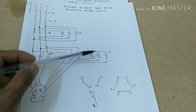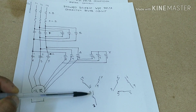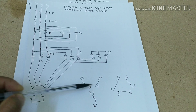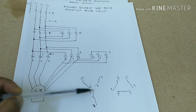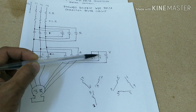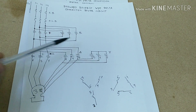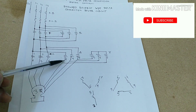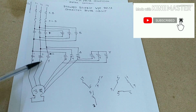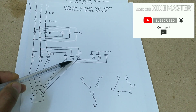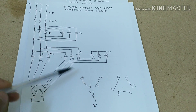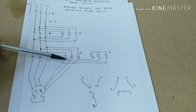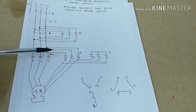When the Y contactor closes, it connects terminals 5 and 4, and 6, 5, 4, and 6 — this is the Y connection for Y starting. Then for delta, it closes terminals 1 and 6, 1 and 6, 2 and 4, 2 and 4, and 3 and 5, 3 and 5. This is the configuration during delta operation.